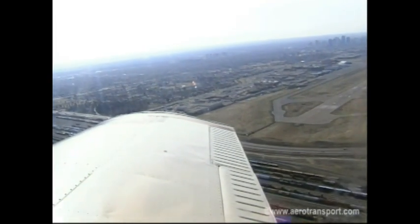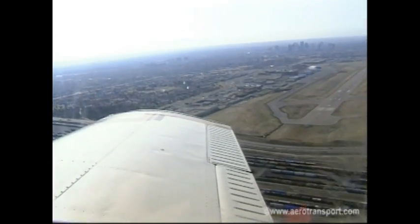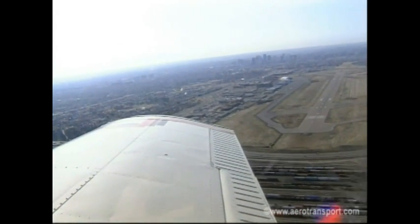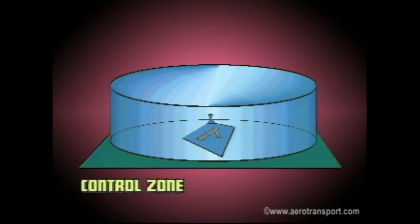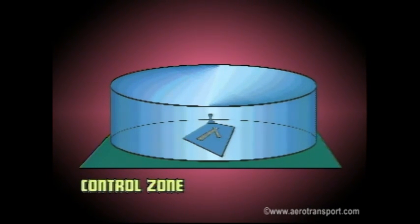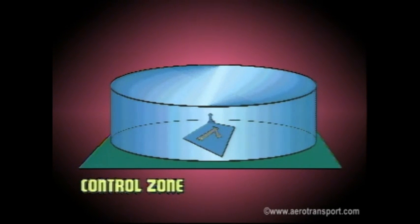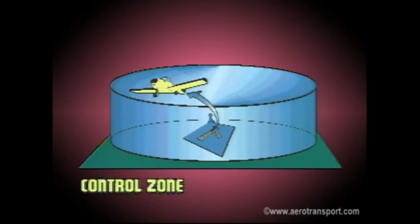You'll now be shown the correct procedures for leaving and joining the circuit at controlled airports. A control zone is the controlled airspace of a defined dimension. It extends upward from the ground to a specified height. The designation 'positive control zone' means special regulations apply within the zone. For all practical purposes, civil airports with control towers may be considered positive control zones.